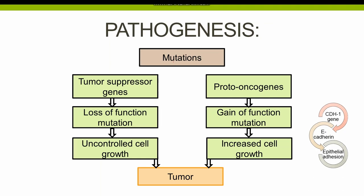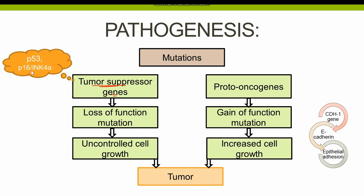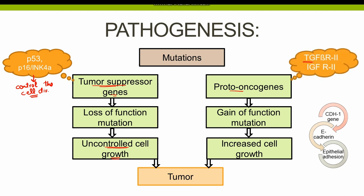There is a role of genetic mutations in gastric adenocarcinoma. There is mutation in tumor suppressor genes, which are mostly p53 and p16. These tumor suppressor genes normally control cell division, keeping cell proliferation under check. There is a loss of function in these tumor suppressor genes, which results in uncontrolled, unsupervised growth of epithelial cells. Moreover, the proto-oncogenes involved include transforming growth factor beta and insulin-like growth factors.